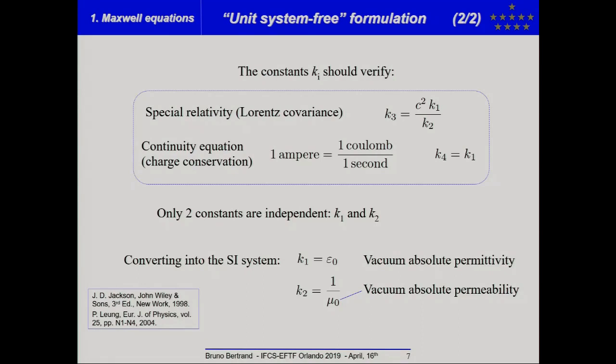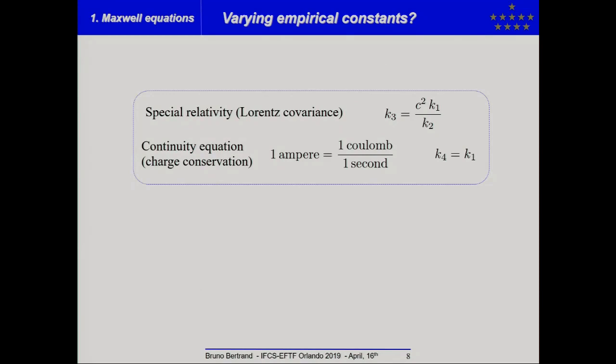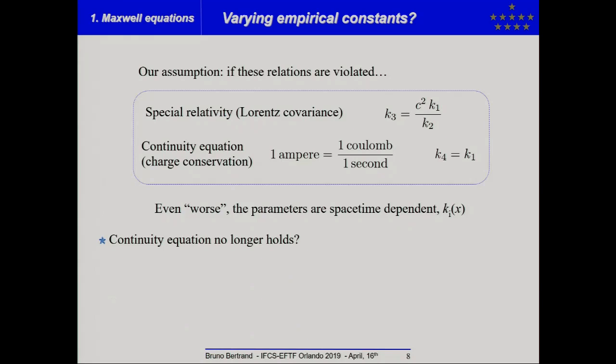And then, if you convert into the SI system, you recover the vacuum absolute permittivity and the vacuum absolute permeability. And so, let us consider this relation between K parameter and we make only a very simple assumption is to figure out that these relations are violated. And even worse, we have introduced the fact that the parameter could be also space-time dependent.